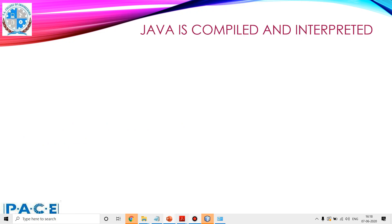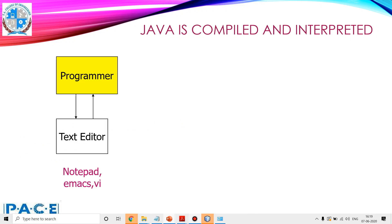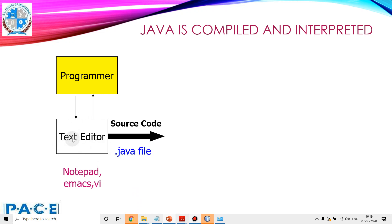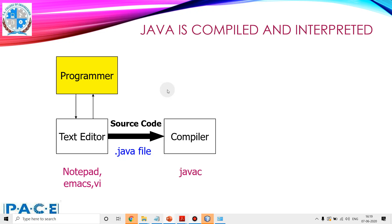Let's see pictorially how Java is compiled and interpreted. A Java programmer writes the program using a text editor — it can be Notepad, Emacs, vi, or any text editor. The result of editing is the source code of the Java program, that is a .java file. We want to compile this, so we use the Java compiler, javac.